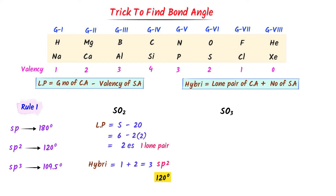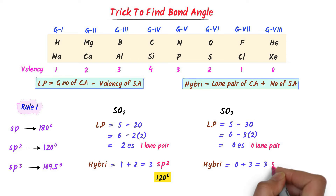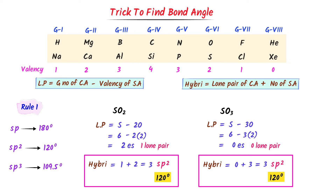For SO3, lone pair equals group number of sulfur (6) minus 3 into 2 (valency of oxygen). I get 0 electrons, so the lone pair is 0. Hybridization: 0 plus 3 surrounding atoms equals 3, meaning SP2 hybridization. The bond angle will be 120 degrees. So sulfur dioxide and sulfur trioxide both have the same hybridization and the same angle of 120 degrees.